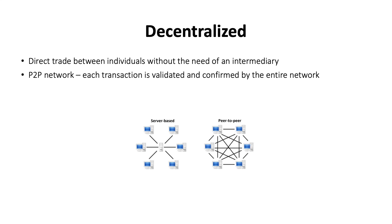Connecting directly to one another is called a peer-to-peer network. Each transaction is validated and confirmed by the entire global network — no single points of authority, no single points of failure. The system is virtually impossible to shut down, manipulate, or control.